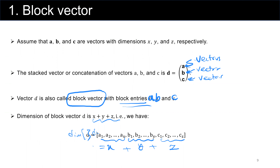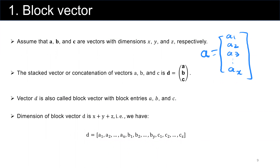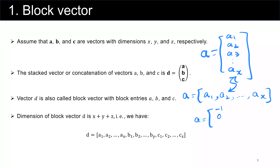Before we move on, I want to clarify the representation. We can represent vector a as a column with elements a sub 1, a sub 2, a sub 3, ..., a sub x. Another way is a equals (a sub 1, a sub 2, ..., a sub x) in a row. These two representations are equivalent. For example, a equals (minus 1, 0, 4) is equivalent to minus 1 comma 0 comma 4. This is just a matter of how we represent vectors.